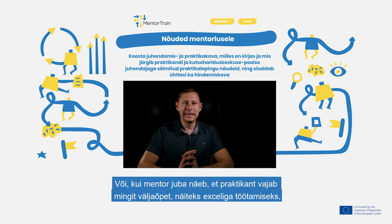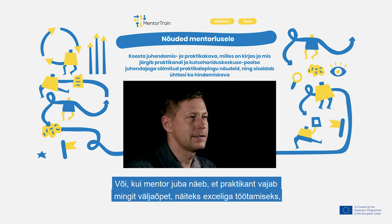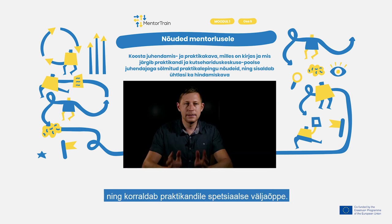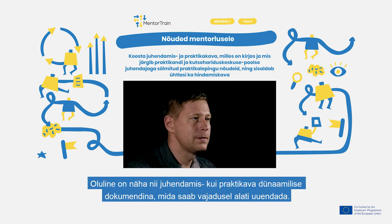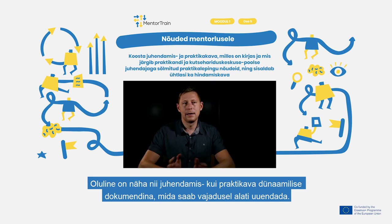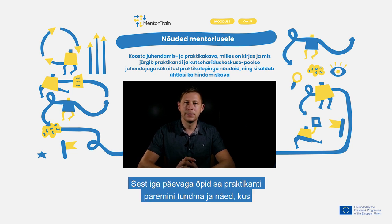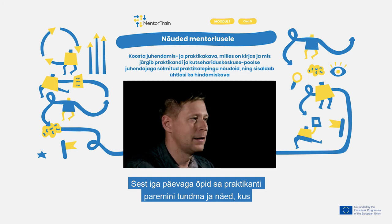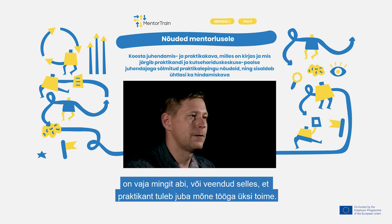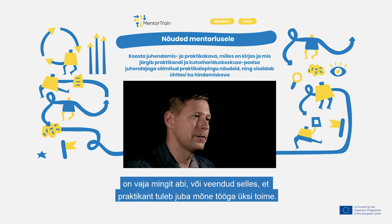For example, the mentor does some work together with the apprentice, and next time the apprentice will do it alone. Or the mentor can see that the apprentice needs some training, for example working with Excel, and will arrange a special training session. It is important to see the mentoring plan and the apprenticeship plan as a dynamic document that you will update whenever needed, because with every day you get better knowledge about your apprentice and see where help is needed, or gain trust that the apprentice can already handle certain tasks alone.